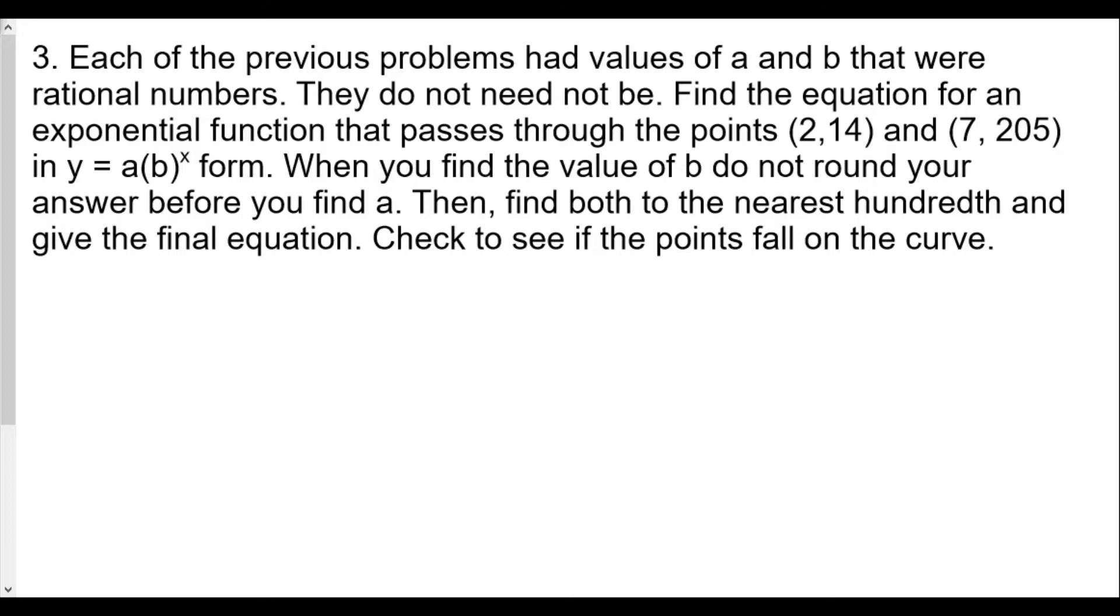We're definitely going to use a graphing calculator, so if you have your graphing calculator, please make sure you have it out and follow along as we go over this question. Our two coordinates are (2,14) and (7,205). So we create our first equation from x and y, filling in the 2 and the 14: 14 equals a times b to the second power. Our second equation comes from the coordinates x is 7 and y is 205: 205 equals a times b to the seventh power.